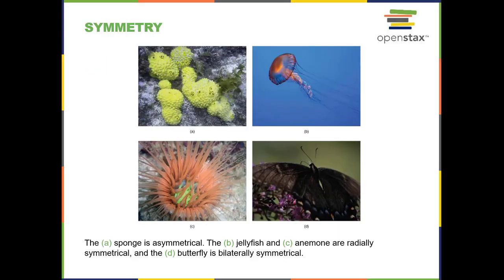Here you have some pictures of different animals that have different kinds of symmetry. In picture A, the yellow sponges are asymmetrical. In B and C, you are seeing animals that have radial symmetry — the sea jelly and the sea anemone. If you look straight down at a sea anemone, the mouth is in the very center, the tentacles surround the mouth all the way around — radial symmetry, like a bicycle wheel or a pizza. The butterfly is an example of a bilaterally symmetrical animal, because there's only one way you could cut it to get two equal mirror image halves.